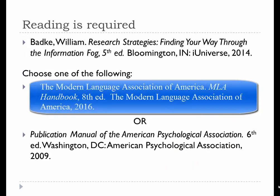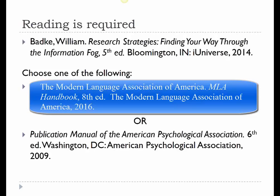William Badke's book, Research Strategies: Finding Your Way Through the Information Fog, is the required textbook for this course. You can purchase a copy in the ISU bookstore or online. If you buy the cheaper e-book version, you will be responsible for reading the correct pages. Along with page numbers, there are usually chapter or section numbers listed in the syllabus or Moodle. This should make it easier for you.